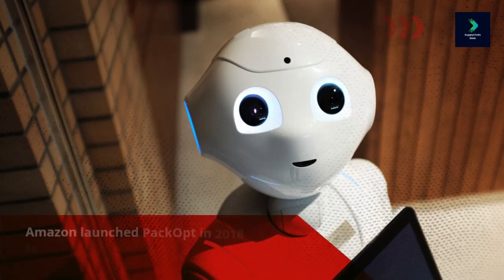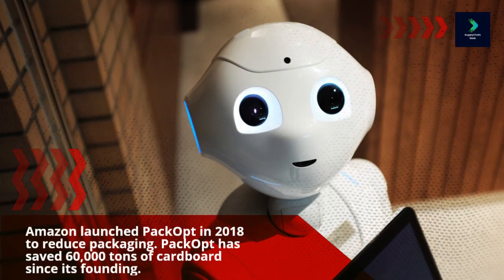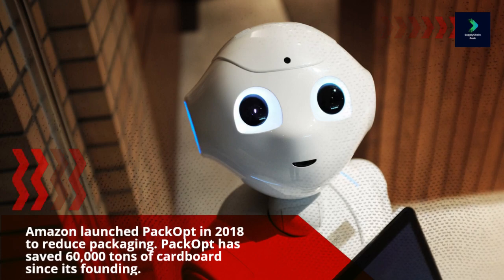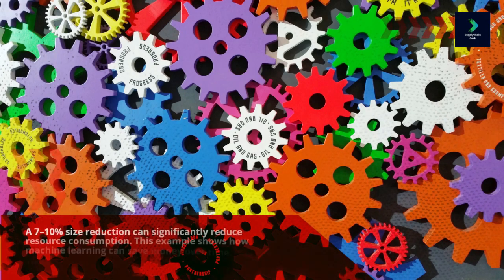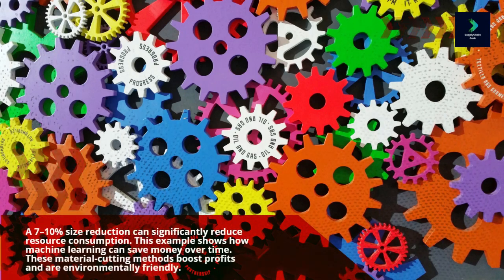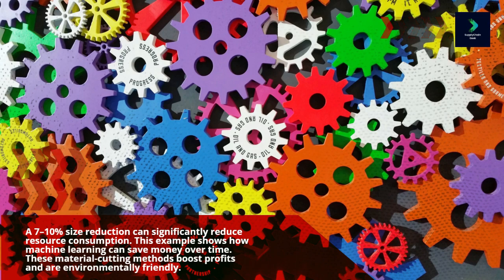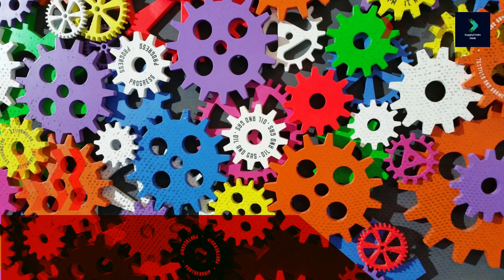Amazon launched Packopt in 2018 to reduce packaging. Packopt has saved 60,000 tons of cardboard since its founding. A 7-10% size reduction can significantly reduce resource consumption. This example shows how machine learning can save money over time. These material cutting methods boost profits and are environmentally friendly.